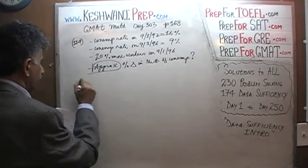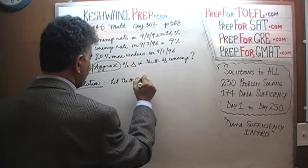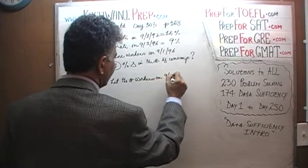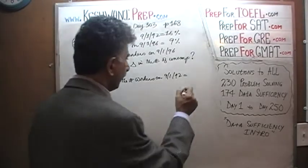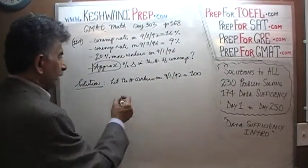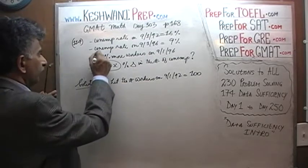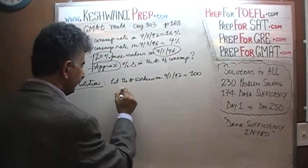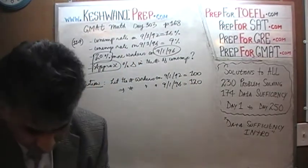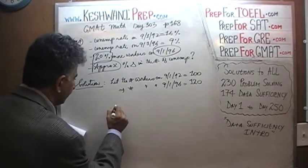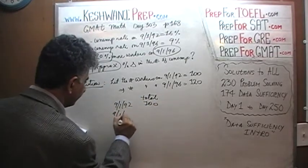Let's begin our solution. Let the number of workers on September 1st, 1992 — our base point — equal 100. Since we are dealing with a percentage problem, 100 is a nice number to work with. If there are 20% more workers in 1996, then the number of workers on September 1st, 1996 is 120.